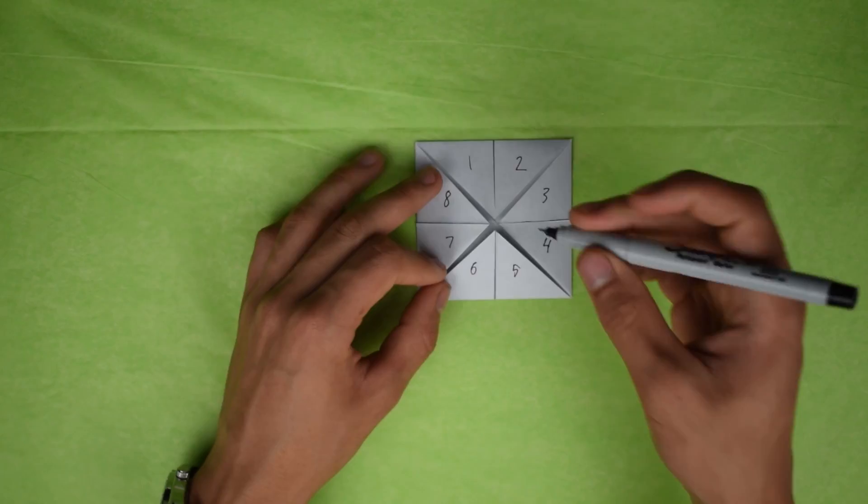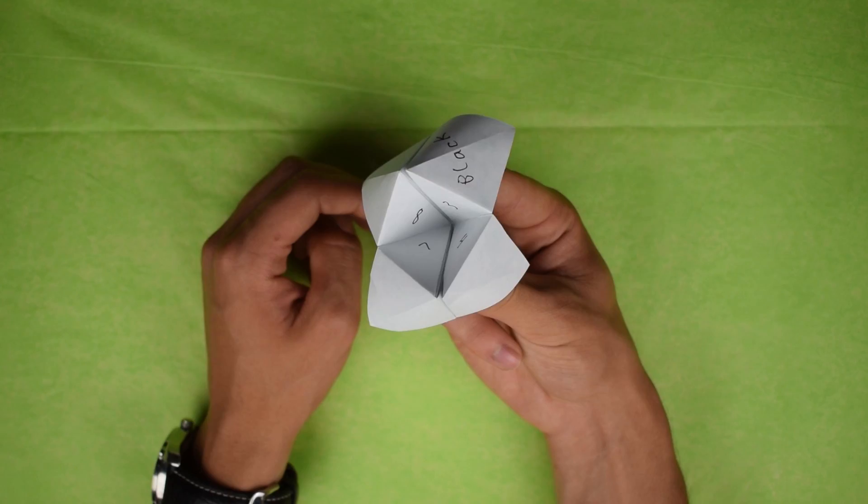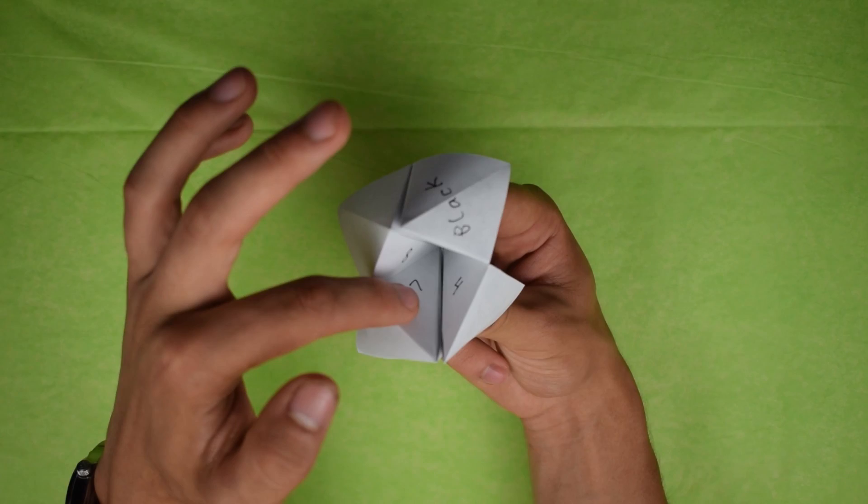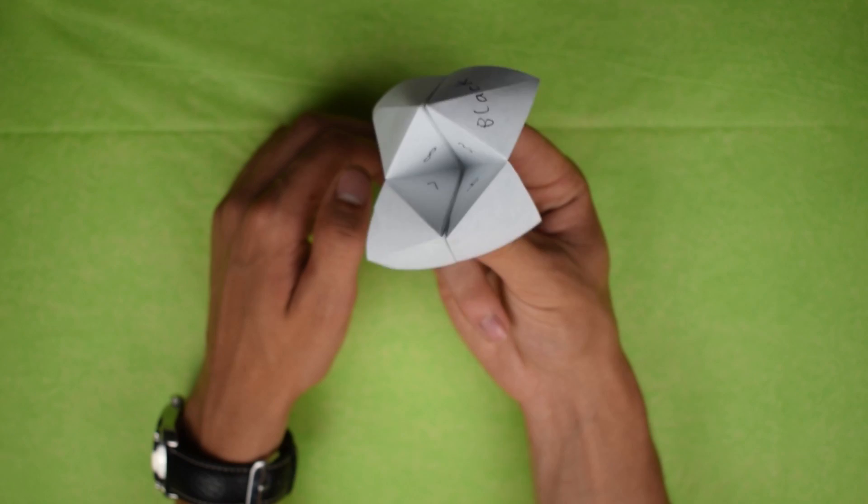Alright? So let's say again someone chose the color black. So we went B-L-A-C-K. Now there's these four numbers. I don't know how well you can see them. But we have an eight, a three, a seven, and a four. So then you'd ask which number? And someone would say number three. And so you'd go okay. And you'd go one, two, three. Alright?